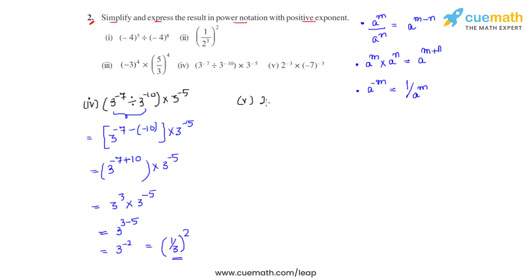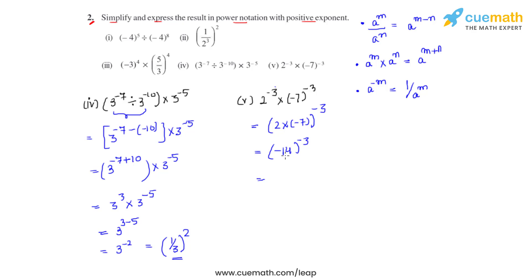The fifth bit says 2 raised to negative 3 times negative 7 raised to negative 3. The powers are the same, so instead of requiring the same base, we can directly multiply the bases: 2 times negative 7, whole raised to negative 3, giving negative 14, whole raised to negative 3. Since the term inside the brackets is negative and the power is odd (negative 3), we write this as negative 1 over 14, whole raised to 3. This is how we get the exponents positive.